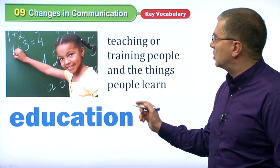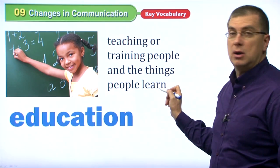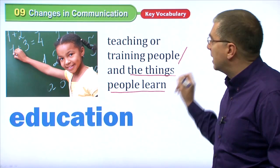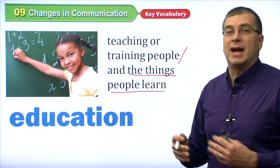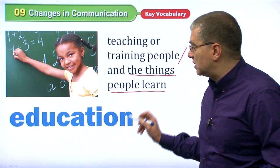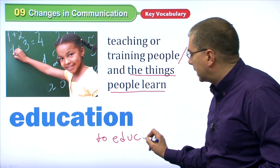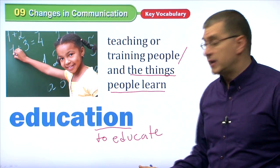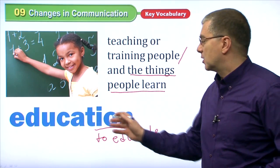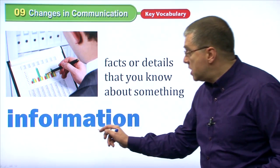Here's another T-I-O-N word: education. Education is teaching or training people, and also the things people learn. There are two parts to this definition: teaching or training people, and the things people learn. What we're doing right now is education — I am educating you. Education is a noun, but 'to educate' is the verb. We can take many of these T-I-O-N nouns and make them into verbs.